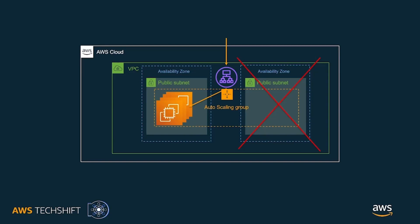In this case, we have lost an availability zone, so the ASG has recreated the lost instances in the other remaining AZ. This ensures there is no impact to the performance for end users.